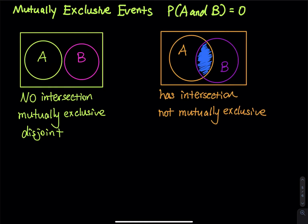Mutually exclusive, look at the first Venn diagram. Mutually exclusive means A and B, they do not share anything. So there is no intersection. A and B, they are completely disjoint.